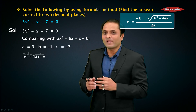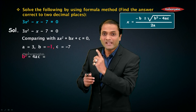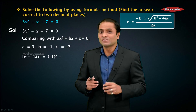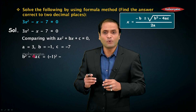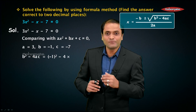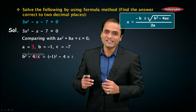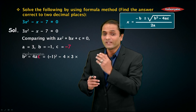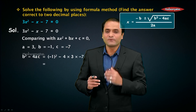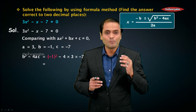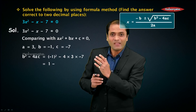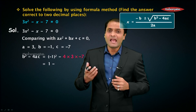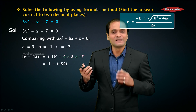So let us calculate b² - 4ac. The value of b is -1, so b² means (-1)² minus 4ac. We substitute 4 × a (which is 3) × c (which is -7), giving us 4 × 3 × (-7). Solving: (-1)² = 1, and 4 × 3 = 12, and 12 × (-7) = -84.